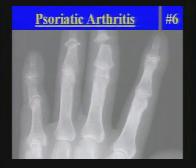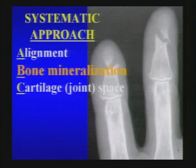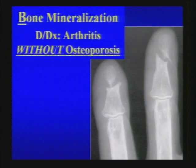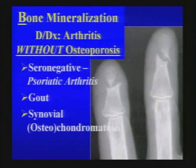Using the systematic approach: alignment, then bone mineralization. Here we don't have osteoporosis. When we have an abnormal joint with arthritis but no osteoporosis, the differential is relatively short. Seronegatives like psoriatic arthritis need to be considered. Gout, synovial osteochondromatosis, and PVNS also belong on that list.